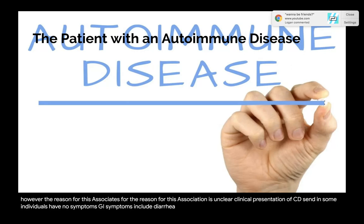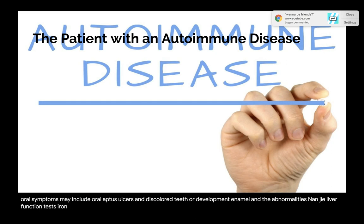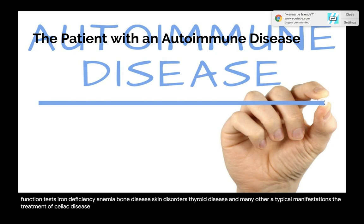Clinical presentation of celiac disease: some individuals have no symptoms. GI symptoms include diarrhea, steatorrhea, weight loss, bloating, flatulence, and abdominal pain. Oral symptoms may include aphthous ulcers and discolored teeth or developmental enamel abnormalities. Non-GI abnormalities may include abnormal liver function tests, iron deficiency anemia, bone disease, skin disorders, thyroid disease, and many other atypical manifestations. The only effective treatment is a gluten-free diet; dietary sources of gluten include wheat, barley, rye, and sometimes oats.